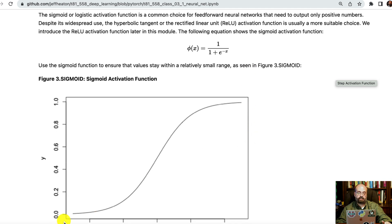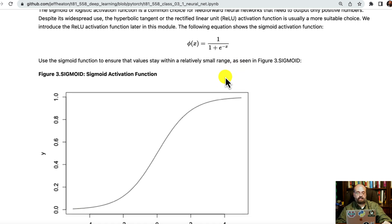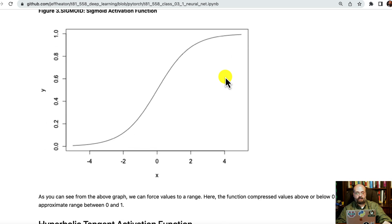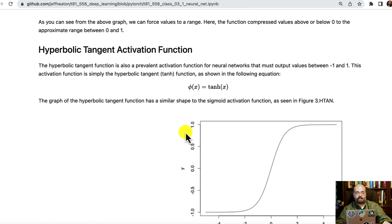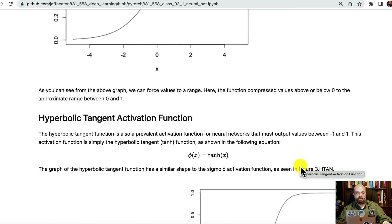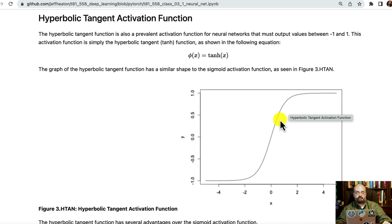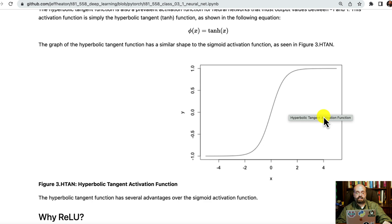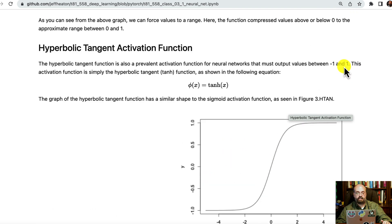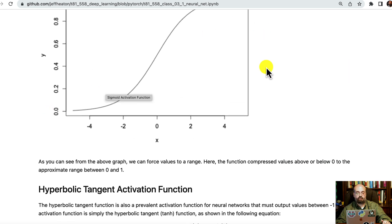Sigmoid activation function, we saw that. That was used a lot more in classic neural networks, but you do see it. It's sometimes used as the output from a binary classification as the logit. And then you also have the hyperbolic tangent. Both of these look pretty similar. They're kind of S-shaped. Tangent may be a little bit steeper. The important thing is the hyperbolic tangent is going between negative one and one. The sigmoid is going between zero and one.